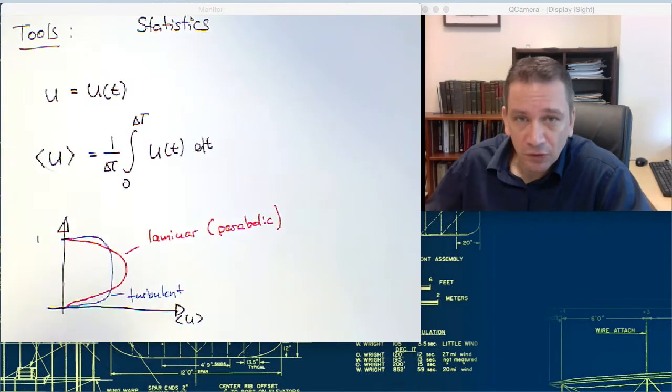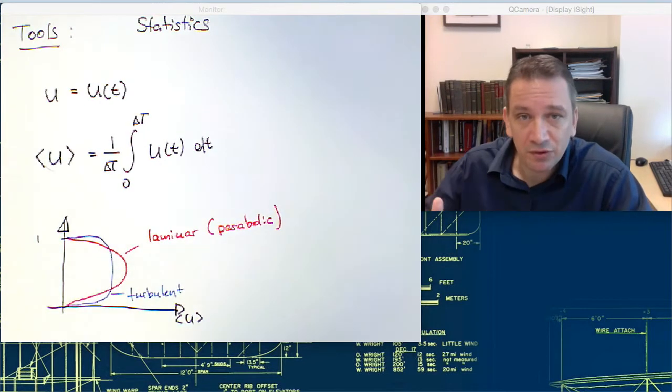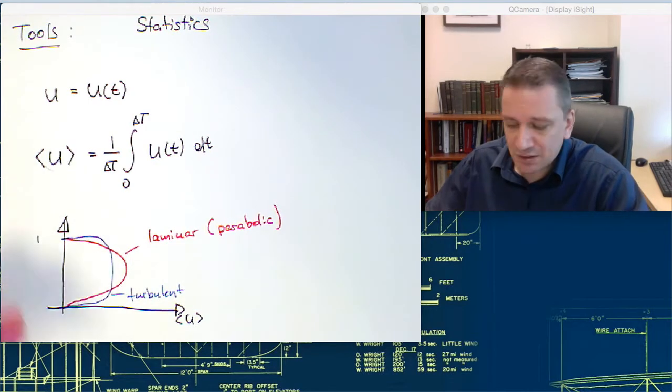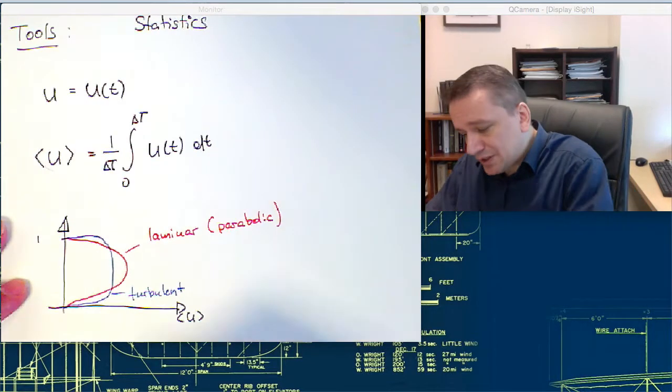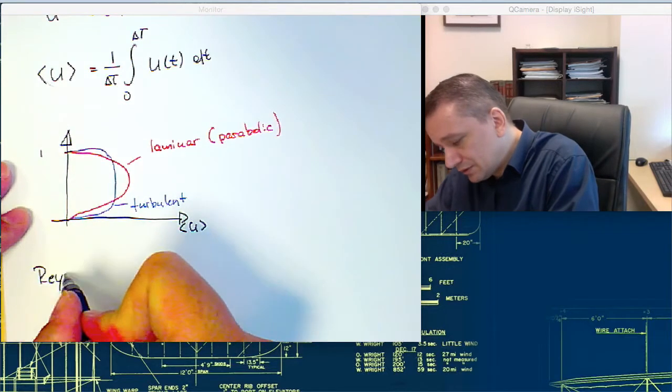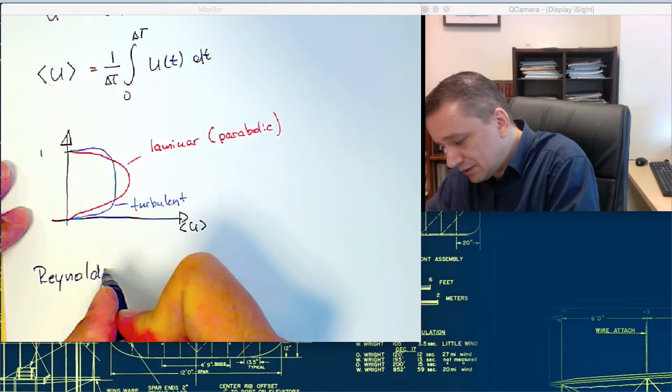Okay, so now we have something about the mean flow field. You also want to know something about the fluctuation itself. So the fluctuation, so how does it change? So first, one of the things that Reynolds has introduced is the Reynolds decomposition.